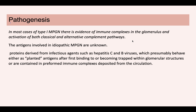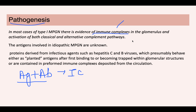Starting with Type 1 pathogenesis: Type 1 is an immune complex-mediated injury. In the body, immune complexes can be formed when antibodies and antigens react in circulation. These circulating immune complexes can then deposit in the glomerulus. The pathogenesis begins with antigen and antibody reacting to form immune complexes, which then get deposited in the glomerulus.